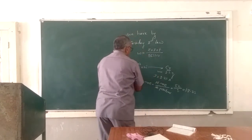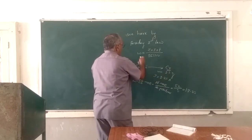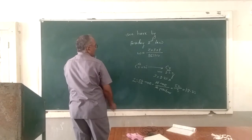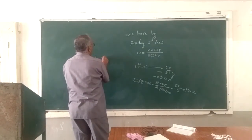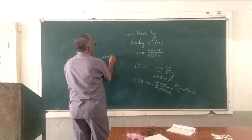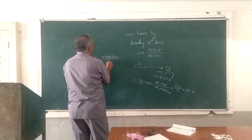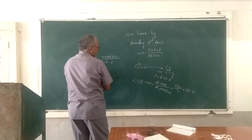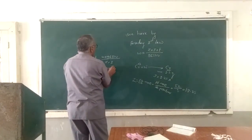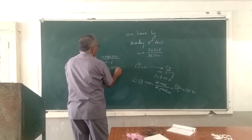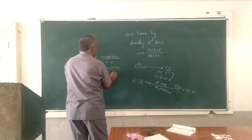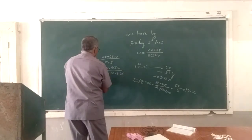Now Z is known, I is known, and W is known. We only have to calculate T. T is equal to W × 96500, divided by Z × I. W is 1.3, multiplied by 96500, divided by Z which is 17.33, and I is 1.25.